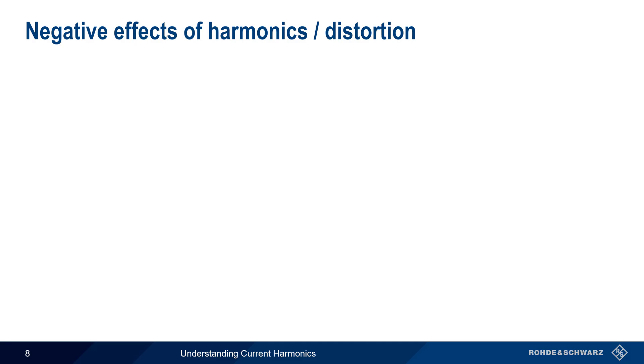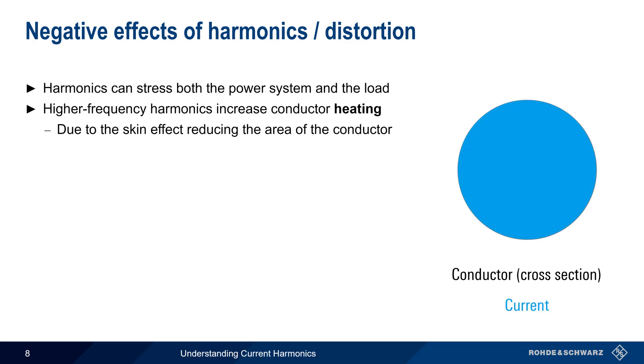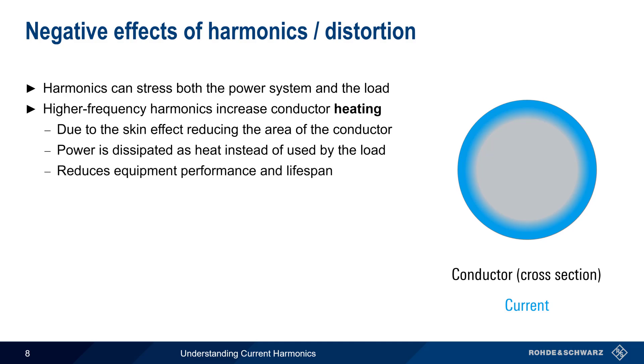Why should we care about harmonics? Harmonics created by nonlinear loads can stress both the power system, or grid, as well as stress the load itself. Most of the stress is thermal. Higher frequency harmonics increase heating in conductors. This is primarily due to something called the skin effect. Lower frequency current will use the entire conductor, but higher frequency harmonic currents travel closer to the edges or skin of a conductor. This effectively reduces the cross-sectional area of the conductor, and thus increases resistance. Instead of being delivered to and used by the load, power is dissipated as heat, and this heat can reduce equipment performance and lifespan.